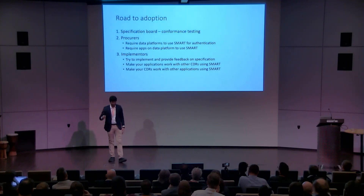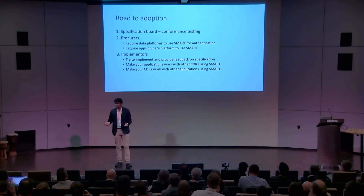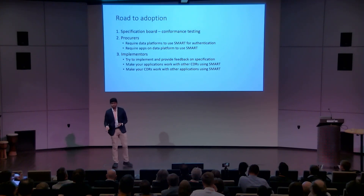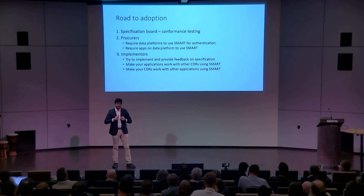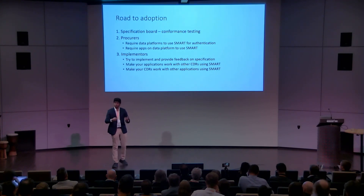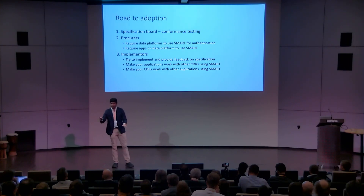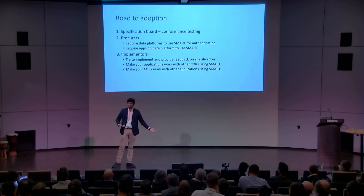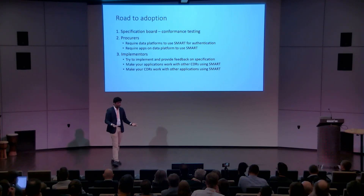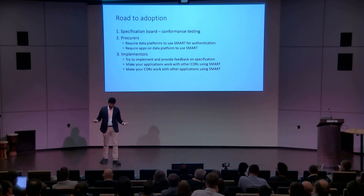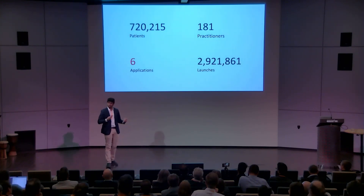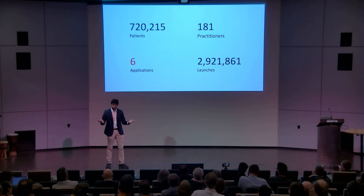How do you start adopting? First is the specification board — we need to come up with conformance testing to verify if somebody is SMART on FHIR compliant. Next is definitely procurers and policy makers, because applications will start coming in as soon as it's written that you need to be SMART on OpenEHR and SMART on FHIR compliant. It's happened before — we've seen proof. Implementers will follow, there will probably be RFIs and procurements. We're already running this in production with all these apps and patients on AirBase, and it's been working great.